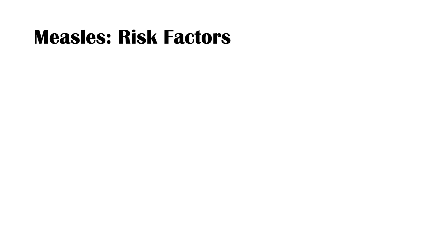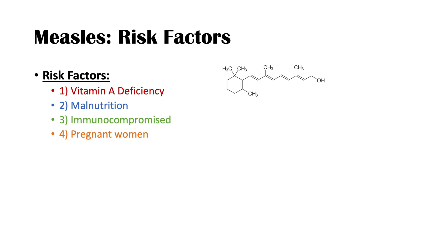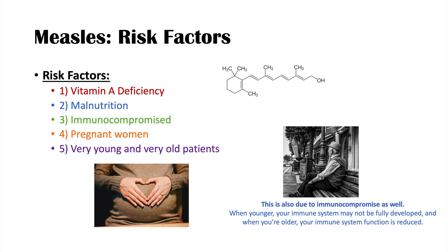The risk factors for getting measles include having a deficiency of vitamin A and malnutrition, which ties in with vitamin A deficiency. Another risk factor is being immunocompromised — if your immune system is not as functional as it should be, you're more likely to become infected. A fourth risk factor is being a pregnant woman. And another risk factor is the extremes of age — being very young or being very old.